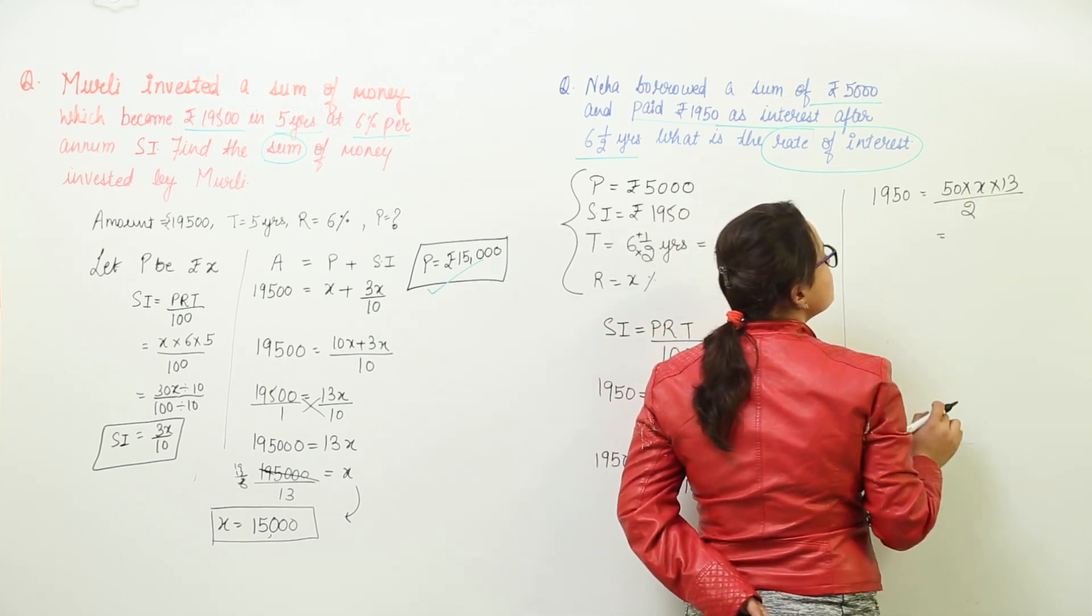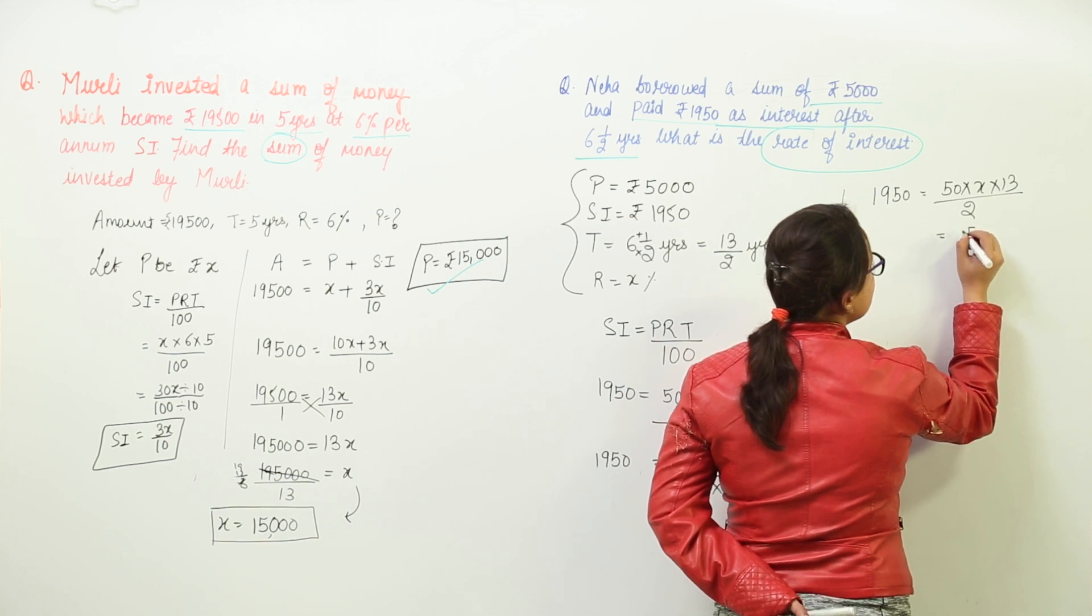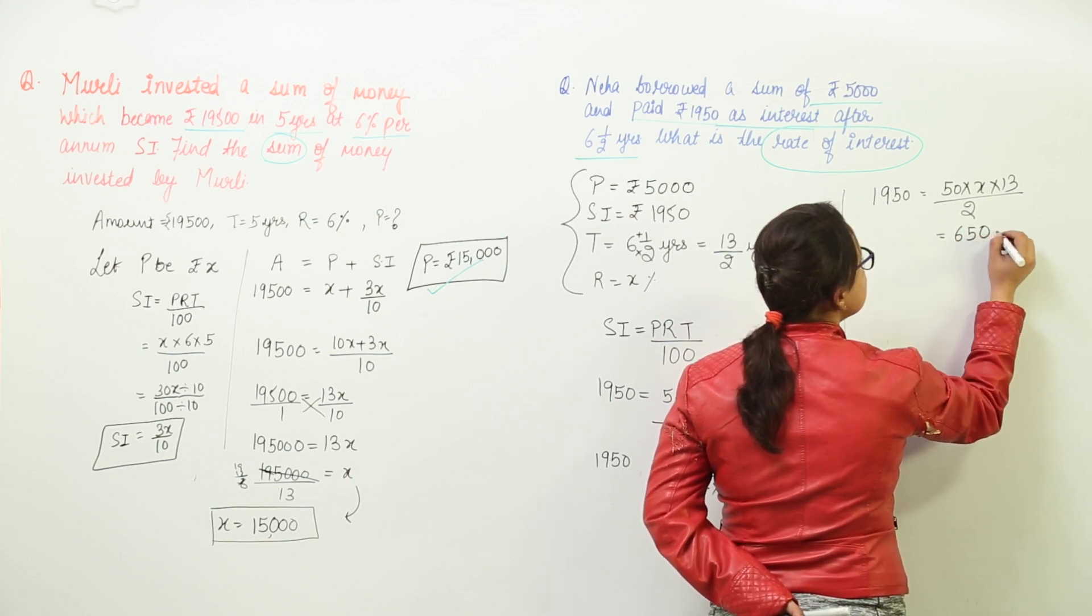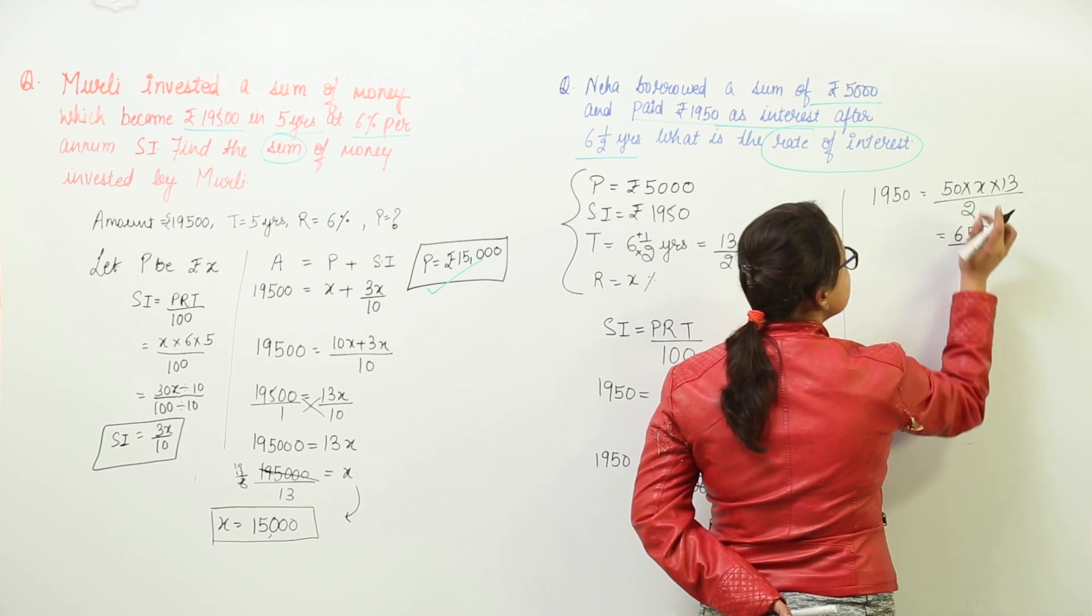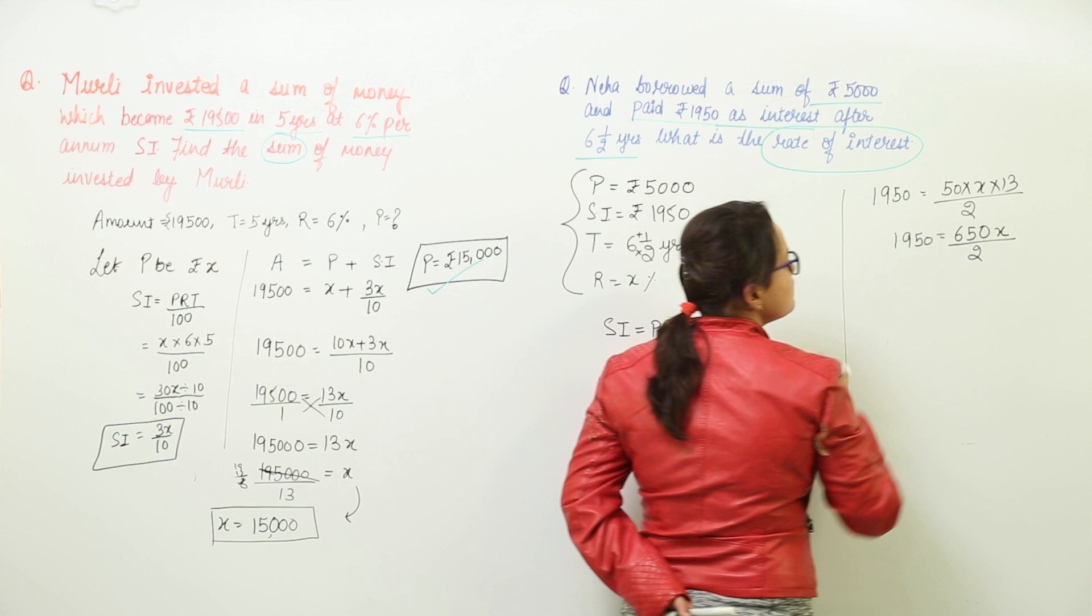Still the numerator can be simplified further. What is 13 times 5? 15 and 1, 65 add a 0 X. So we get 650 X upon 2 equal to 1950.